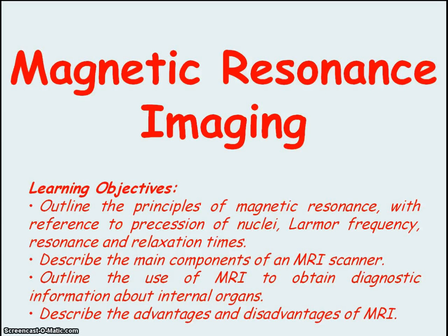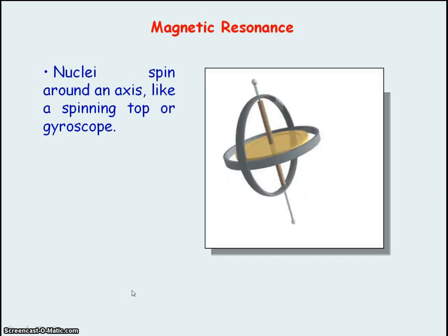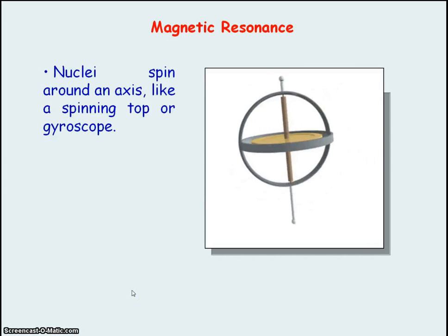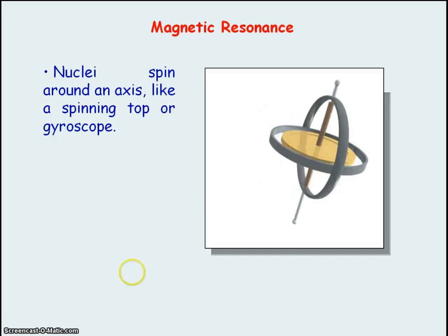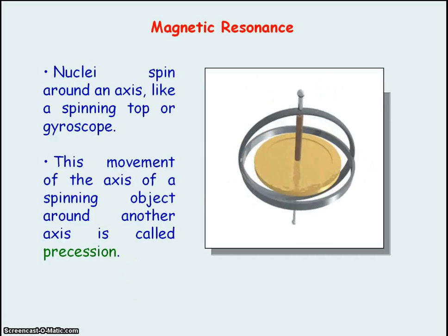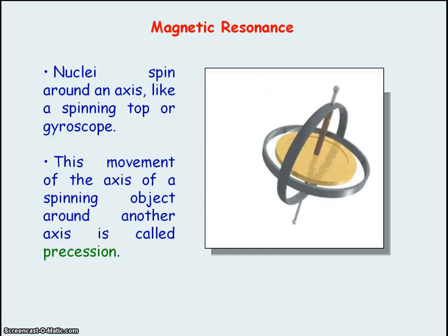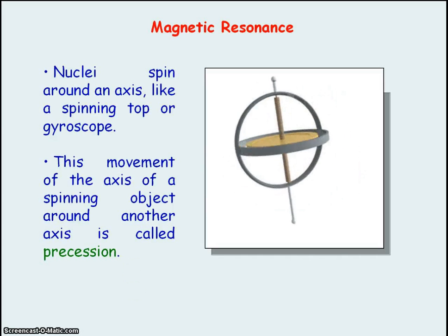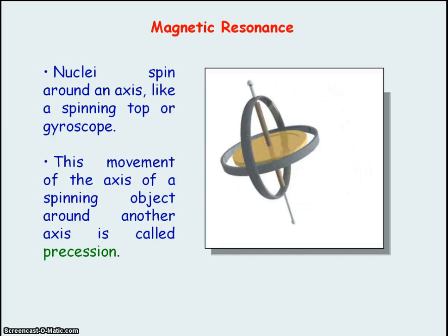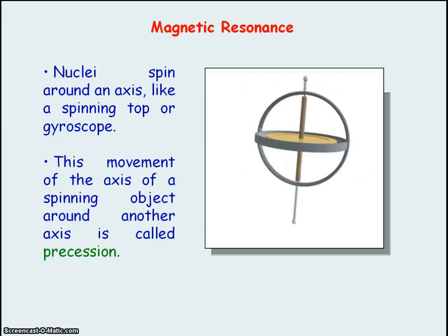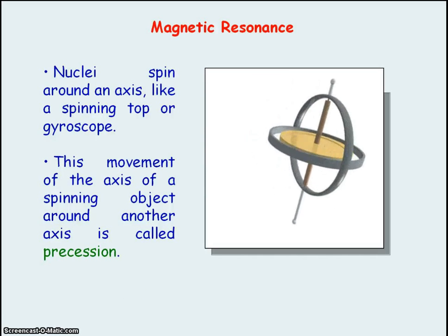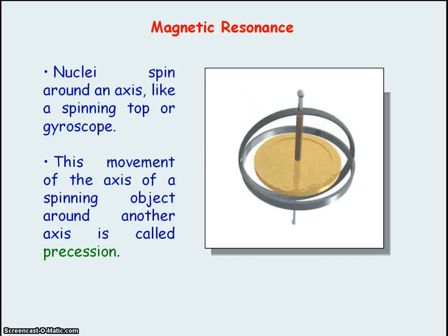We're going to be looking at magnetic resonance imaging. Some nuclei spin around an axis just like a spinning top or the gyroscope shown in this animation. The movement of an object that spins around its own axis but also moves around another axis is called precession. An example would be Earth, which spins around its own axis but also orbits around the axis of the sun.